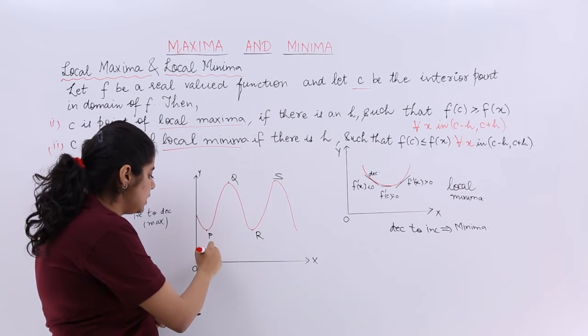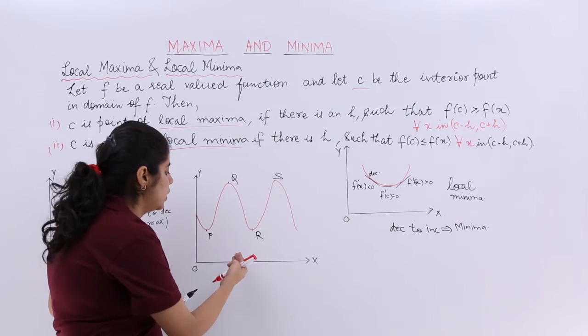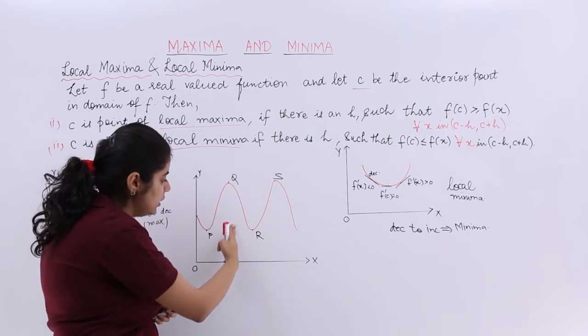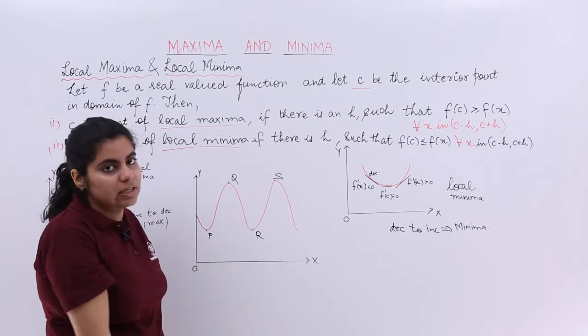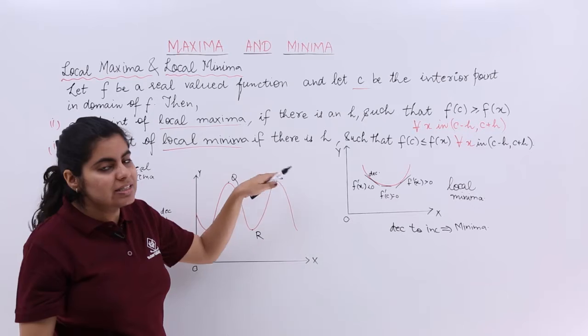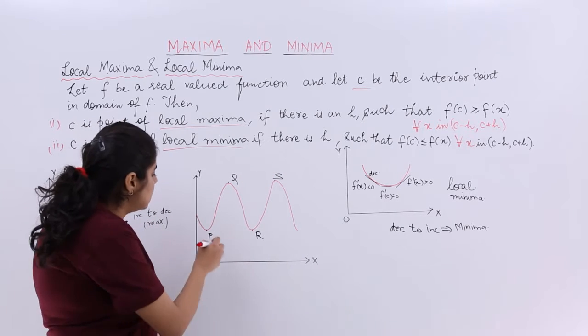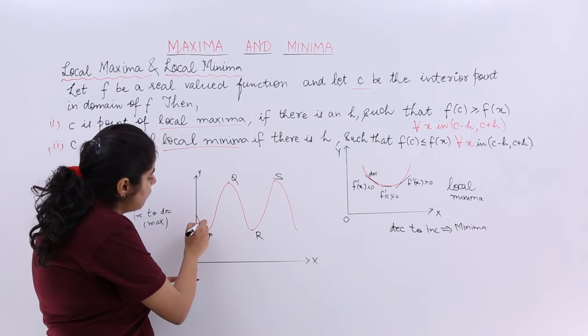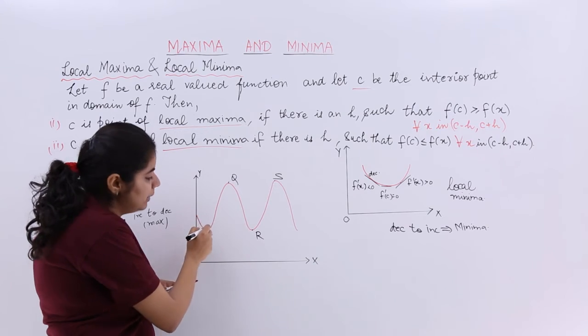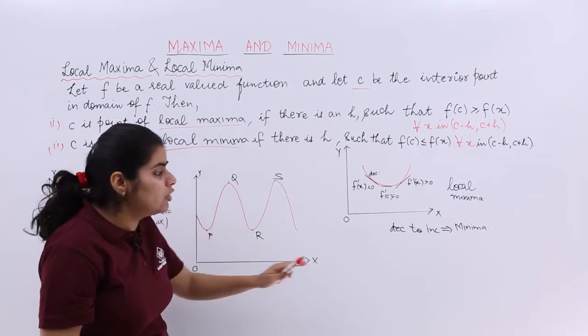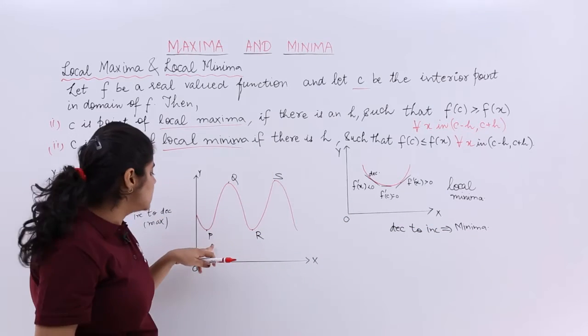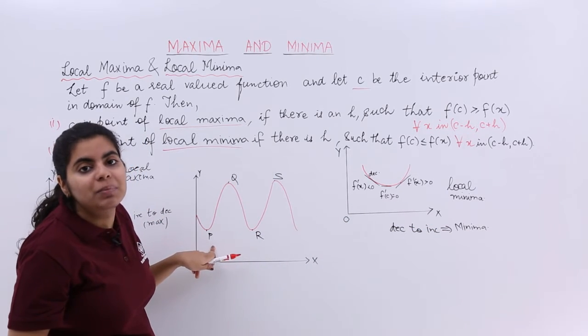Now you see that P is downwards. Then the graph turns and then Q is there which is upwards. And then again the graph turns, R is downwards. Again the graph turns, S is upwards. So that means earlier it was what? If I have to point here, it will be decreasing. Then a turning point, then increasing. So decreasing to increasing is minima. Hence P is a point of local minima.